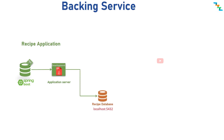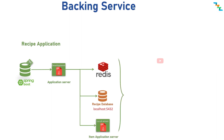For example, the recipe application uses Redis for caching, Postgres database for persisting the recipe data, and also connects with the Item API service. Here, Postgres, Redis, and the Item API service are backing services.